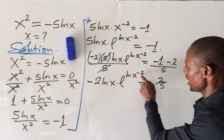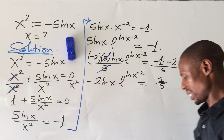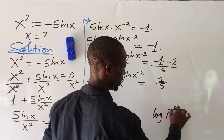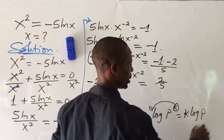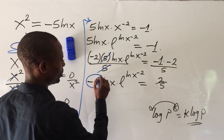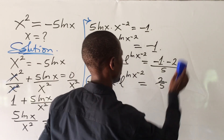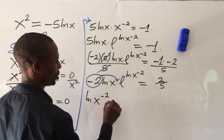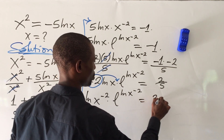The game is playing out now. We have a negative power here, so let's move it according to the logarithm power law, which says that a times log of p to the power of k equals k times log(p). Applying this rule, we can move the minus 2 exponent, giving us ln of x to the power of minus 2 times e to the power of ln(x) to the power of minus 2, equal to 2 over 5.